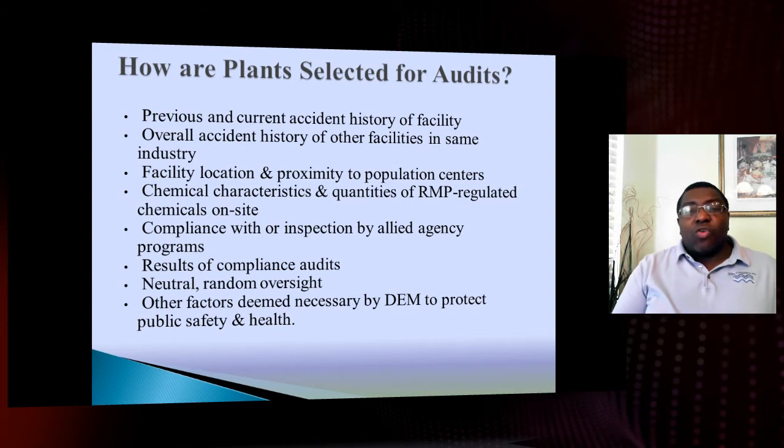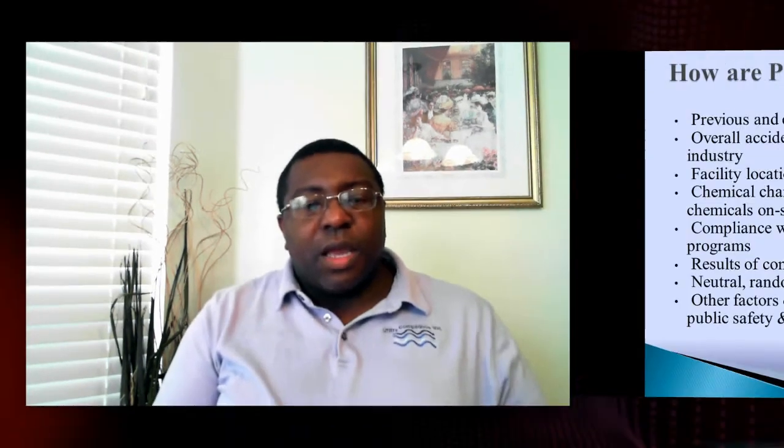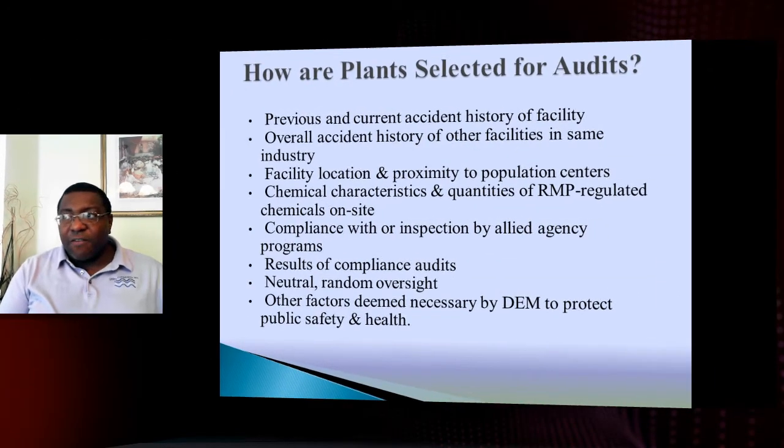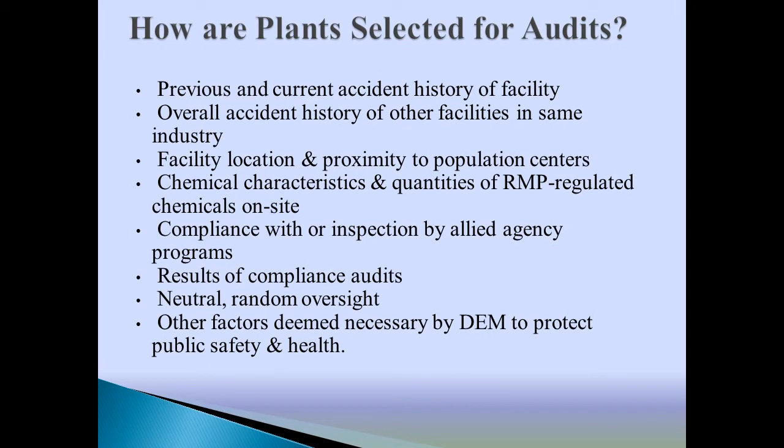Chemical characteristics and quantities of your risk management plan regulated chemicals on site, compliance inspections by allied agency programs — meaning if another regulatory body conducted an inspection and noticed a large quantity of anhydrous ammonia and referred you to the Department of Emergency Management — that referral is another trigger. The results of a prior compliance audit, neutral or random oversight, and public concerns reported to the DEM can also prompt an audit.